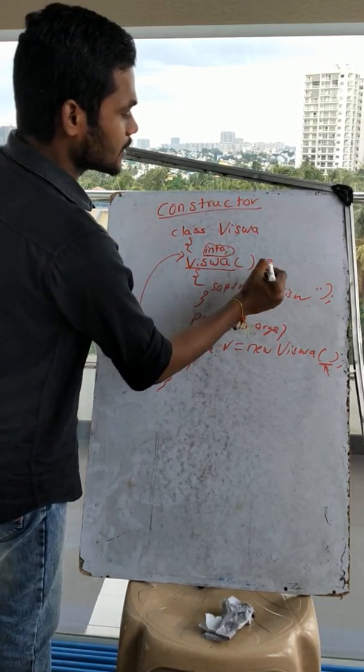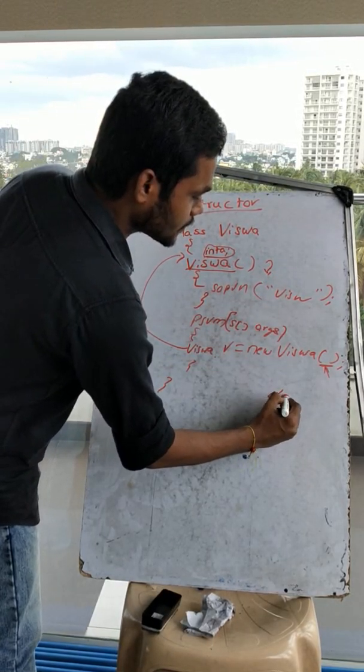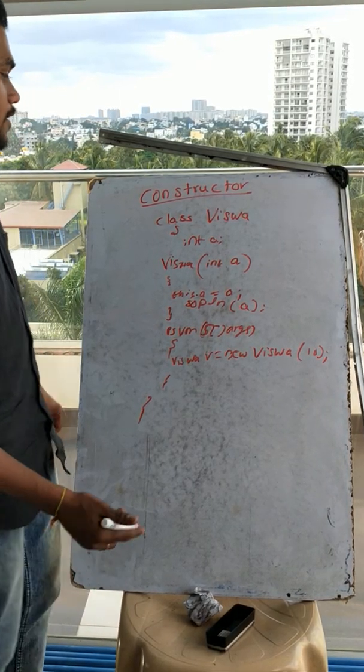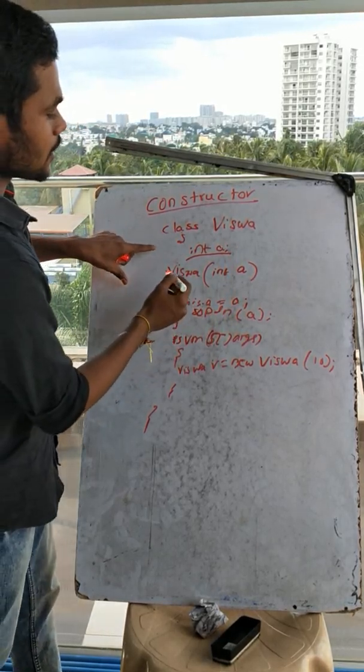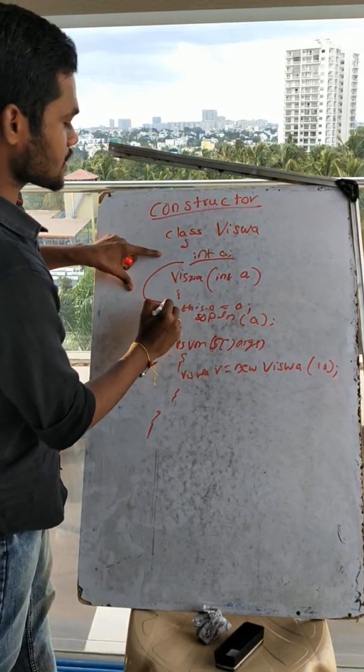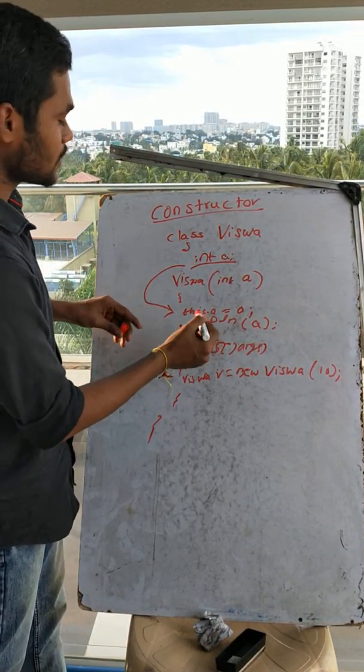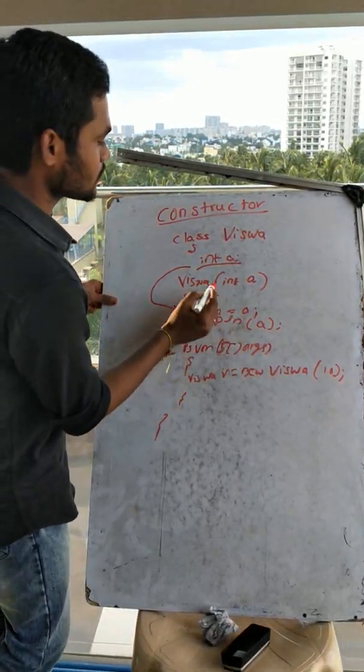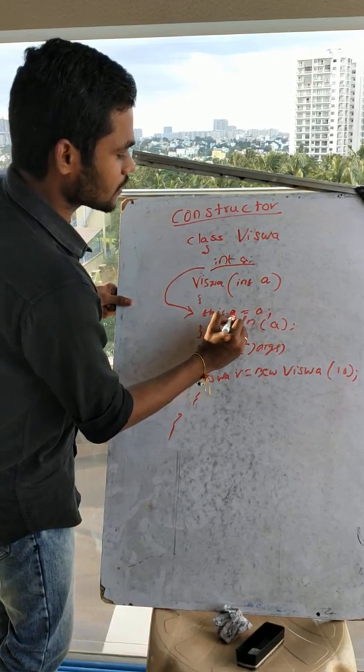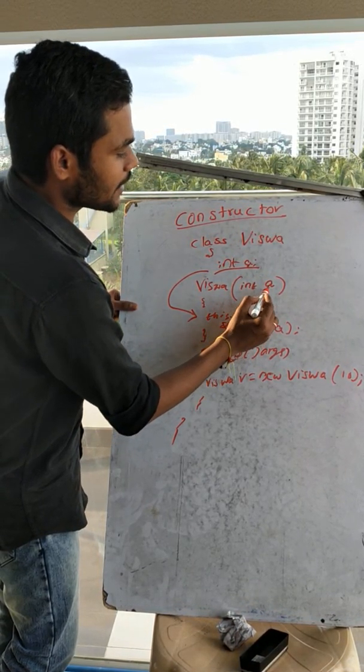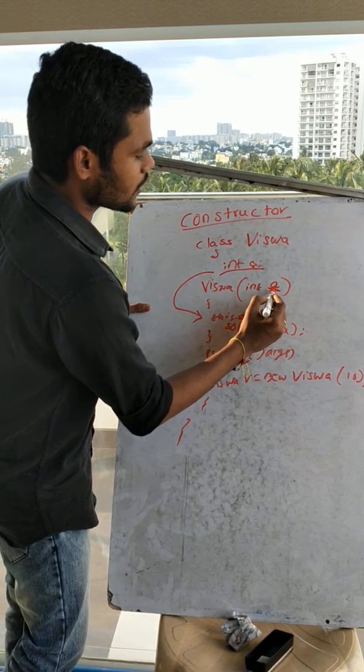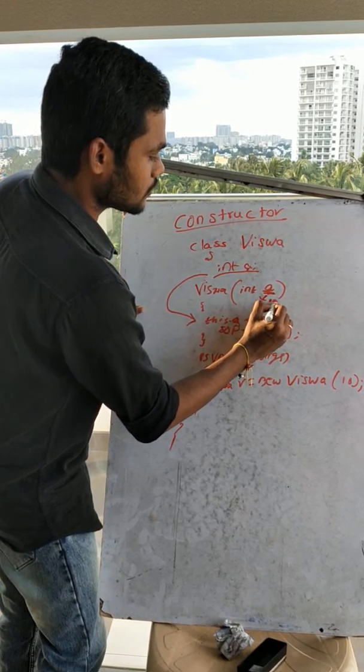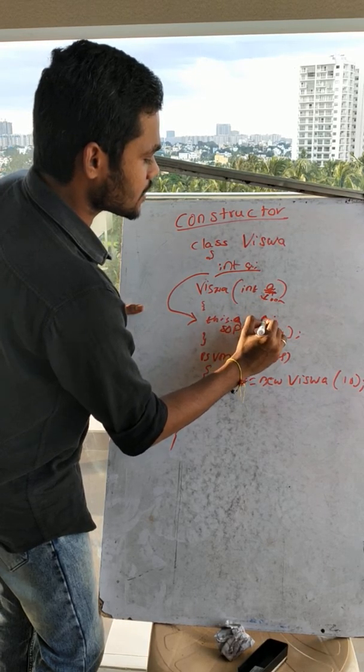The output will be displayed. Here, there is a global variable, and we need to initialize it by using the 'this' keyword. By using the 'this' dot operator, this refers to the global variable A. The initialization of A is done where A is a local variable.